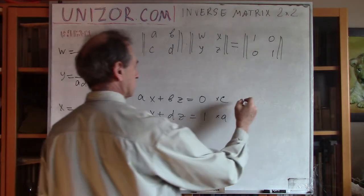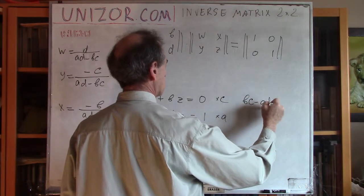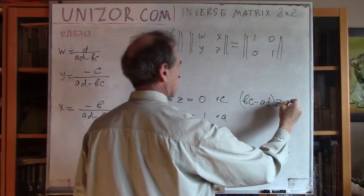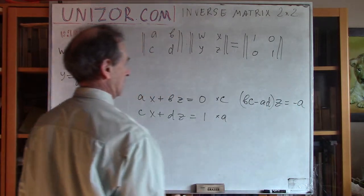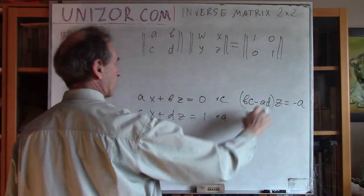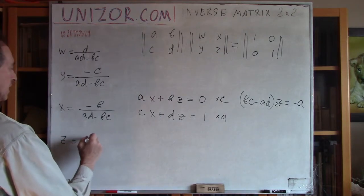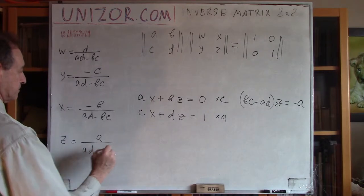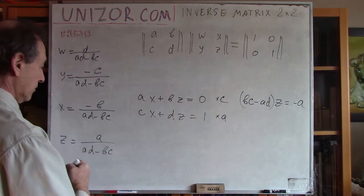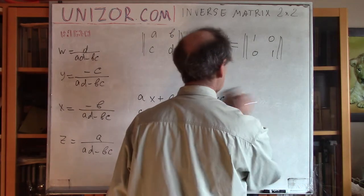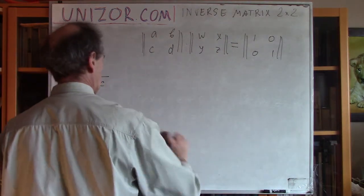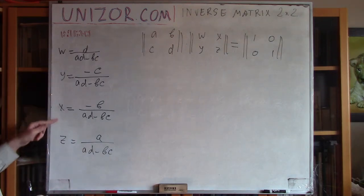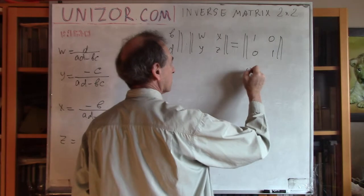And, I will get B, C minus A, D, Z. Now, this is 0, this is A. Minus A, right? Or, again, I reverse the signs and I will get A over A, D minus B, C. Okay, my system of four equations with four variables is solved. And, what's very important is that it is solved with one and only one condition.